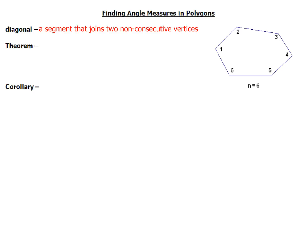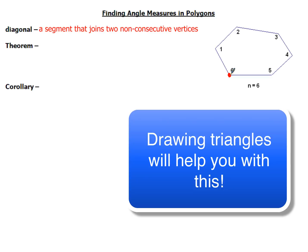The first thing we need to do is define the word diagonal. A diagonal is a segment that joins two non-consecutive vertices. If you look at our picture over here on the right-hand side, we've got a six-sided figure. I'm going to start down here with vertex six and draw a diagonal all the way over to angle two, then another one to angle three, and another one to angle four. Those are my non-consecutive vertices — angles two, three, and four.